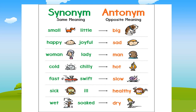The synonym for fast is swift. The antonym for fast is slow. The synonym for sick is ill. The antonym for sick is healthy. The synonym for wet is salty. The antonym for wet is dry.